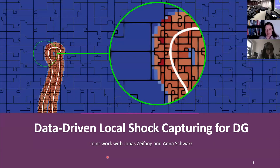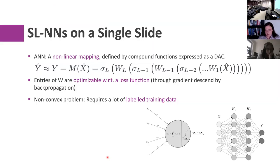Now let's come to the main part of my talk: showing you how we can use machine learning methods to augment these schemes. The only thing I want you to remember about DG schemes is that they have large elements with sub-cell resolution within each element. The first example will deal with supervised learning for shock capturing.